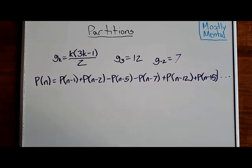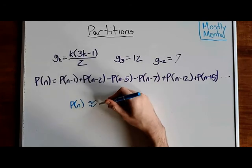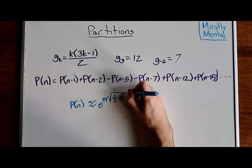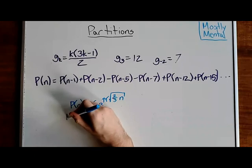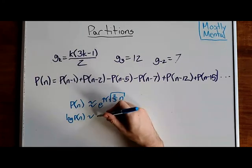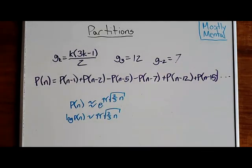But, what if we want to get the number directly, without having to compute any of the smaller p of n's in the process? Well, there's no nice formula that's going to spit out the exact number, but we can get pretty close. It turns out that p of n is roughly equal to e to the pi root 2 thirds n, or more exactly, log of p of n is approximately pi root 2 thirds n. For very strict definition of roughly.